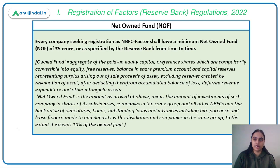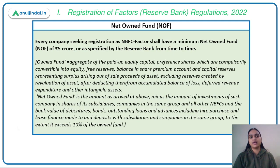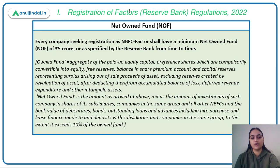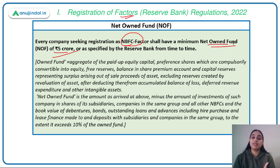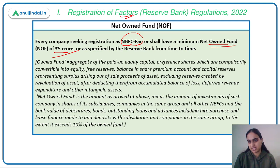RBI has come up with two sets of regulations. Let's discuss them one by one. The first is on registration of factors — which companies can provide factoring services. Any company that wants to register as an NBFC factor should have a minimum net owned fund of 5 crores, or whatever value RBI specifies.